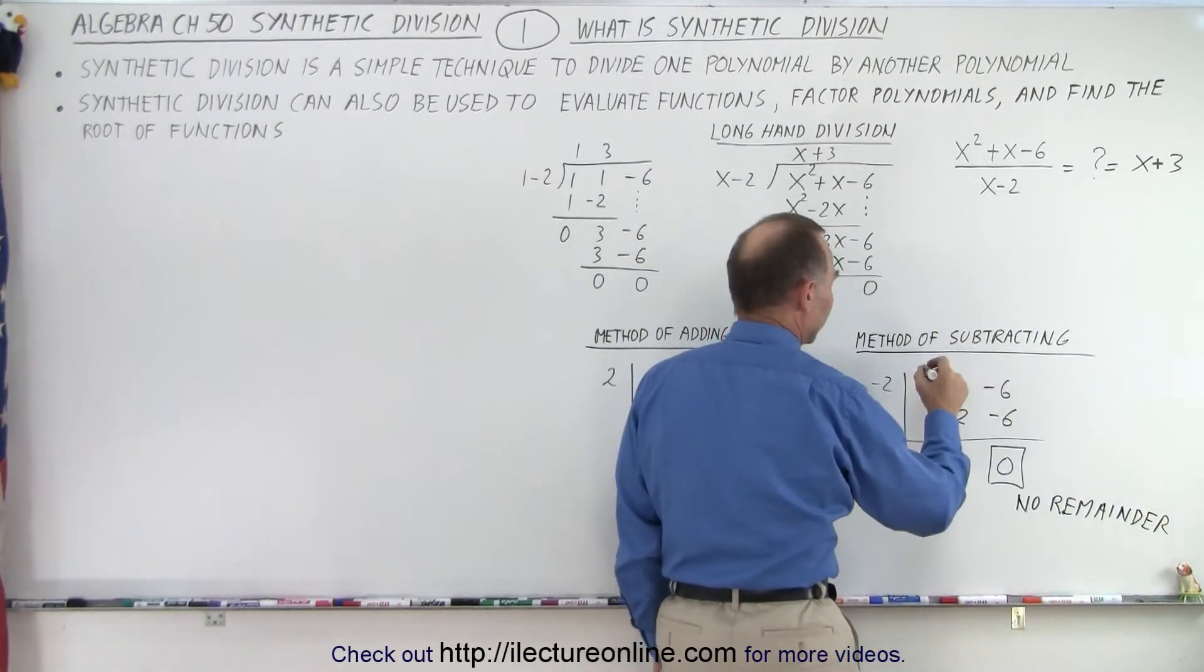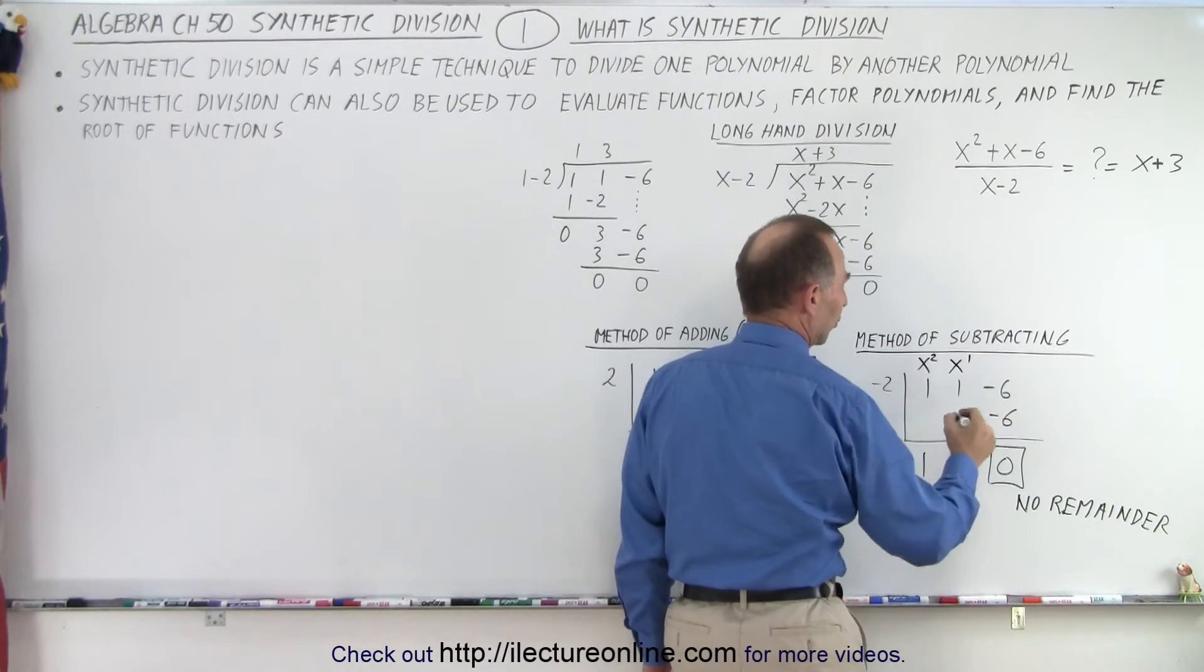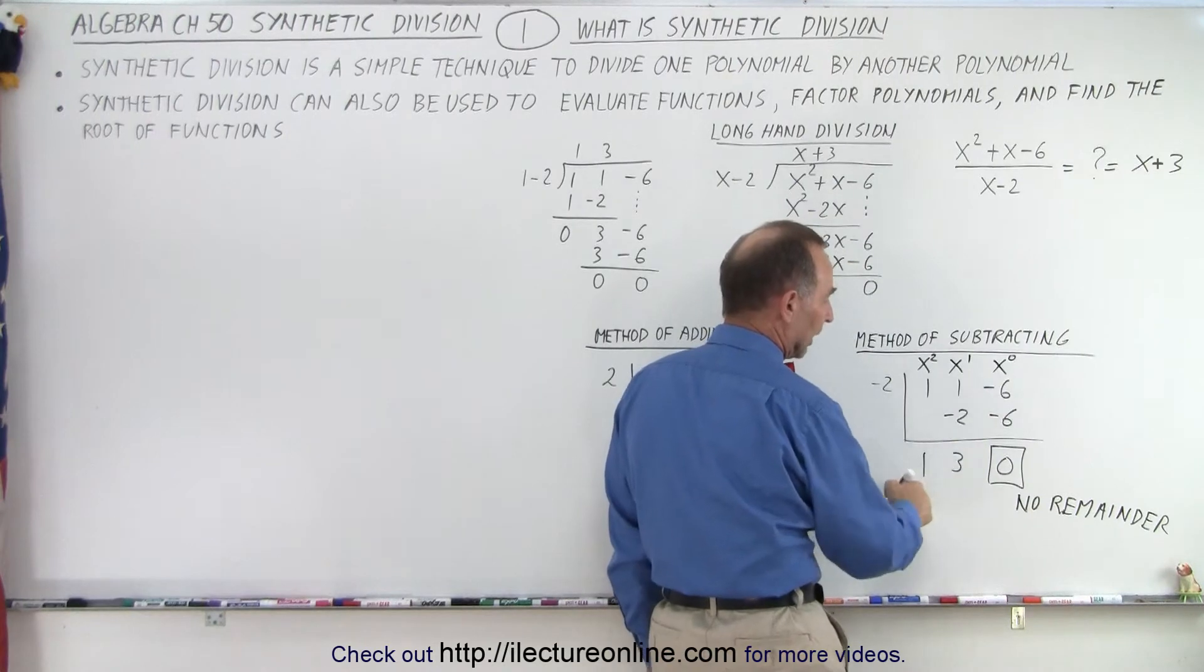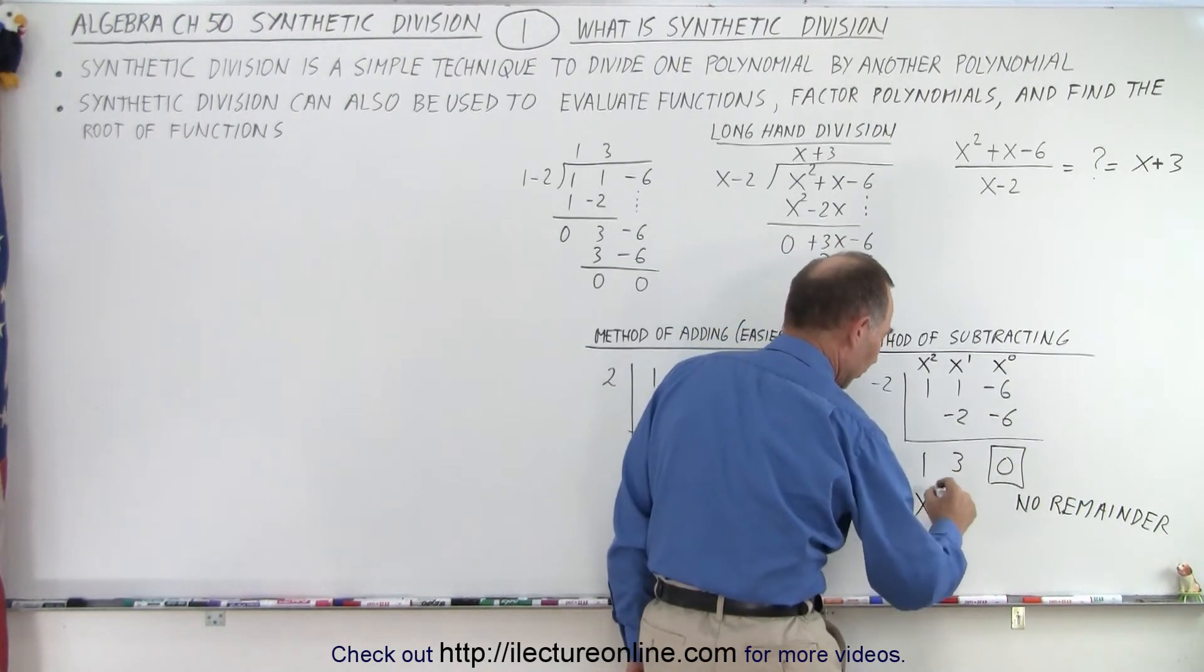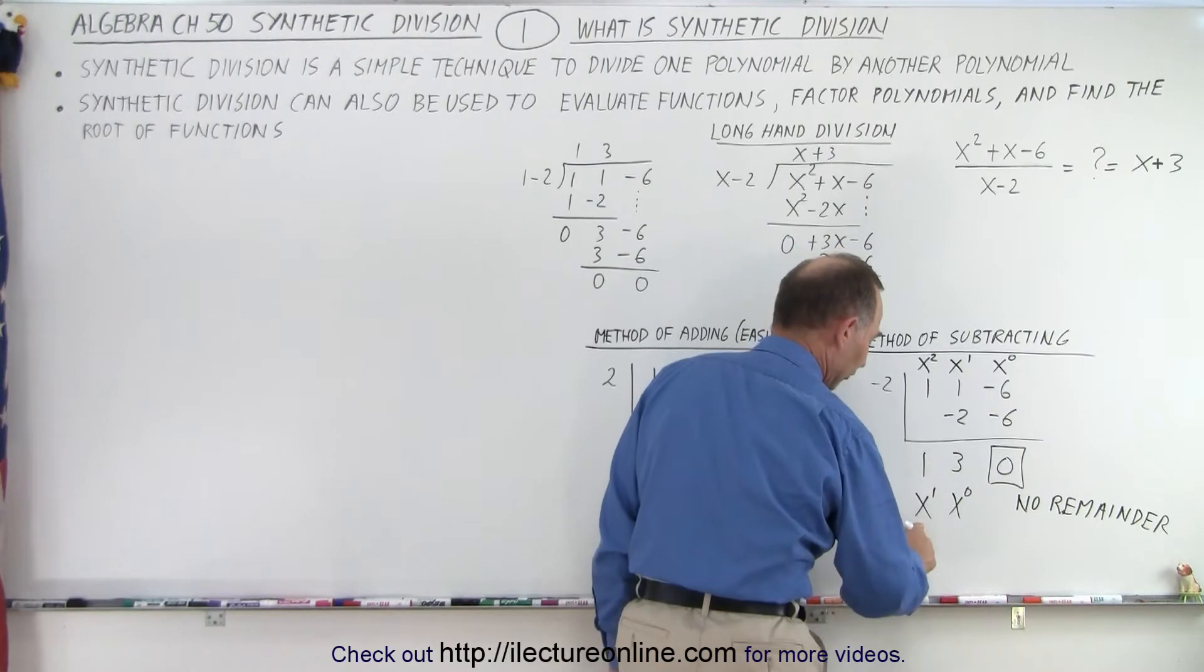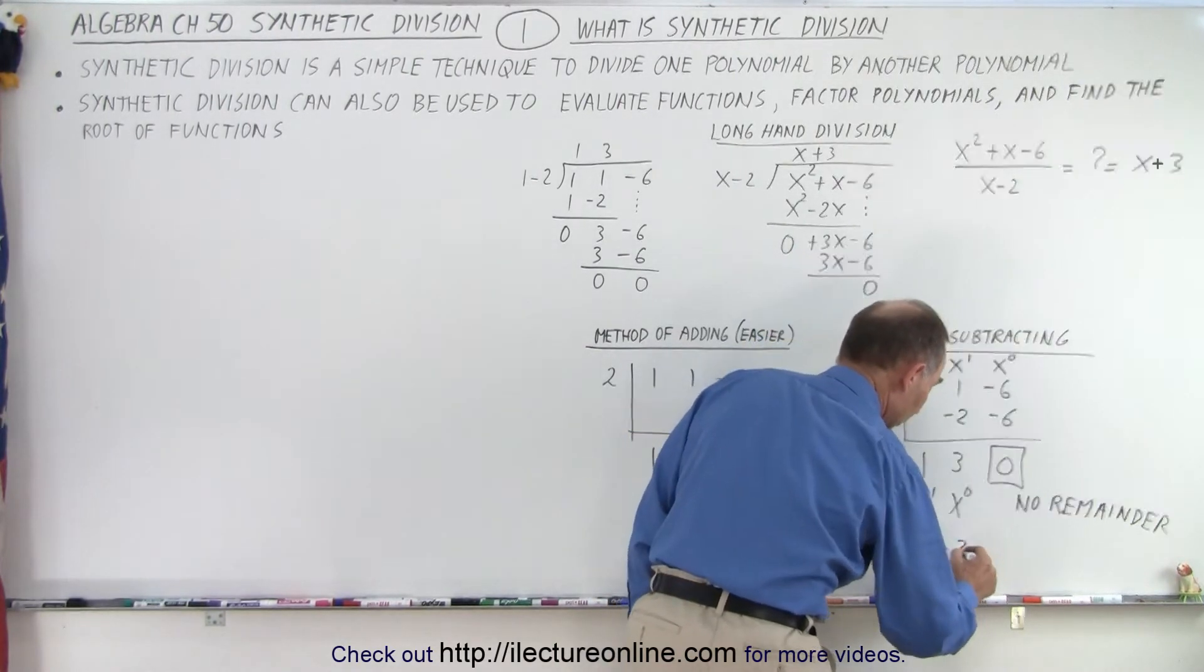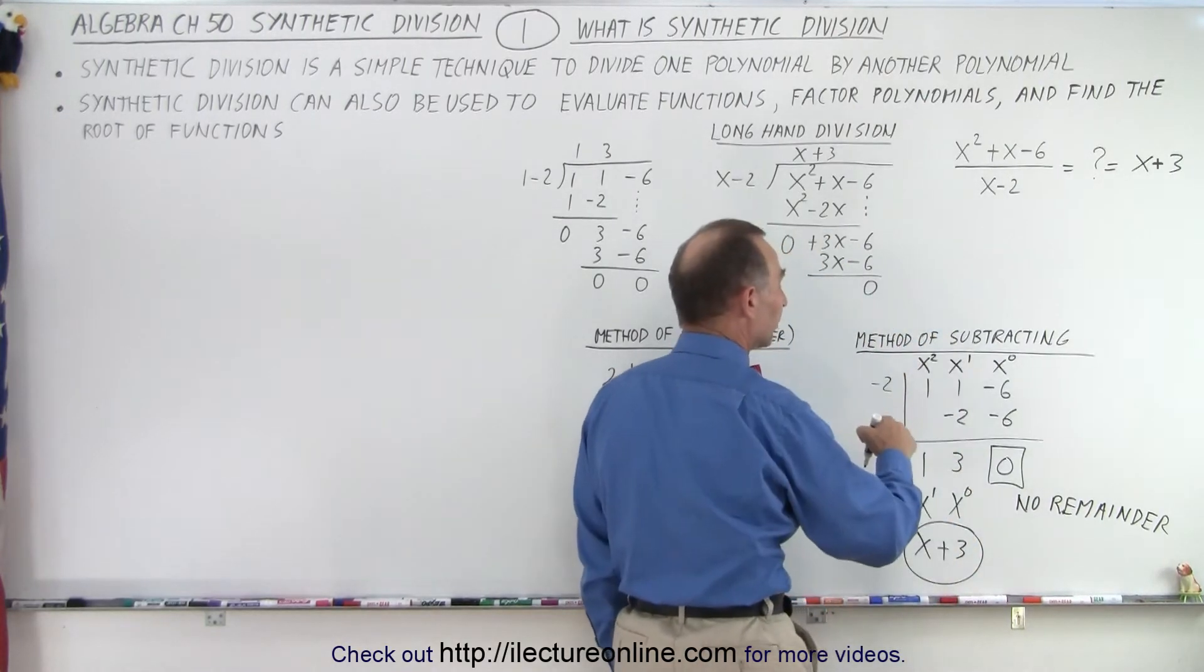Notice in the numerator, this represents the x squared term. This represents the x to the first term. And this represents the x to the 0 term, or the constant. In the denominator here, this is the solution. This represents the x to the first term and the x to the 0 term. And notice that we simply say we have 1x to the first power, or x, plus 3x to the 0 power, which is simply 3.